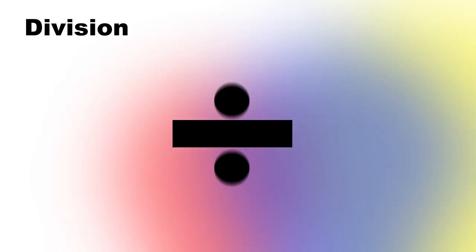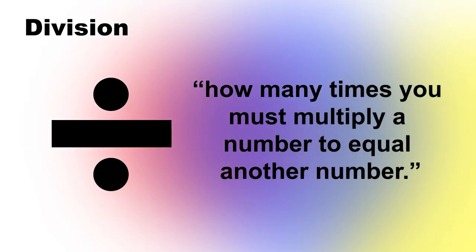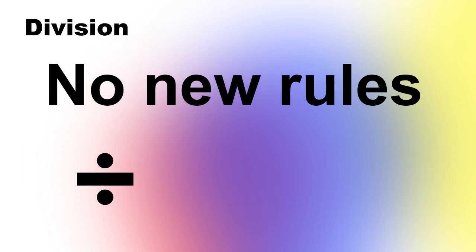We can build division off of multiplication by defining it as how many times you must multiply a number to equal another number. Notice that there are still no more new rules. Division is based solely on multiplication, which we built off of addition.